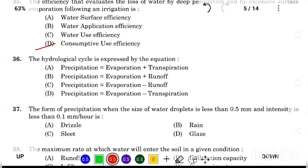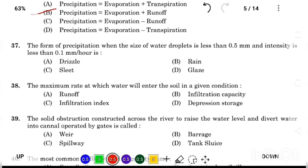The hydrological cycle is expressed by equation Answer Option B, precipitation equals evaporation plus runoff. The form of precipitation when the size of water droplet is less than 0.5 mm and the intensity is less than 0.1 mm per hour.